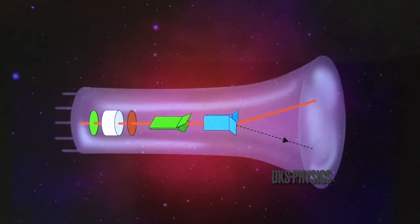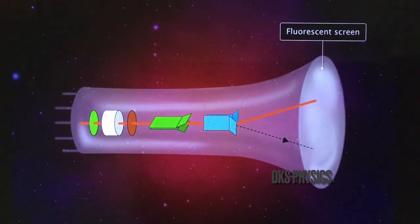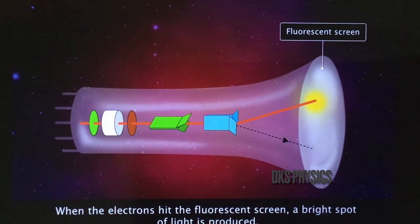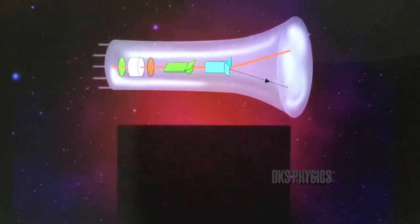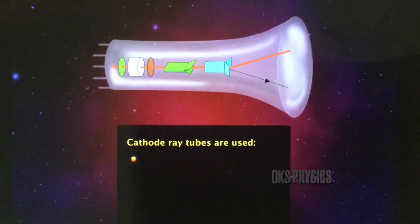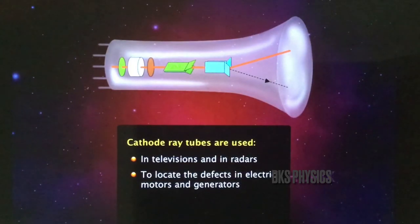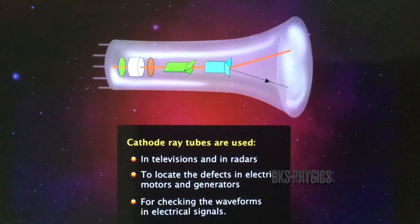At the end of the cathode ray tube is a specially designed screen coated with a fluorescent material. When the electrons hit the fluorescent screen, a bright spot of light is produced. The color of the light depends upon the fluorescent material coating the screen. Cathode ray tubes are used in televisions and radars. They are also used to locate defects in electric motors and generators and for checking the waveforms in electrical signals.